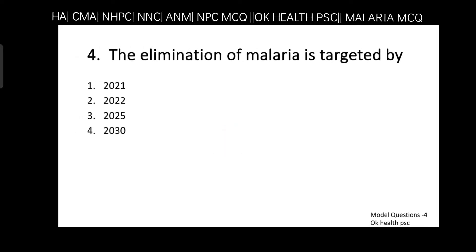Question number four: the elimination of malaria is targeted by which year? 2021, 2022, 2025, or 2030? Answer is option three — 2025. Malaria elimination is targeted for 2025.